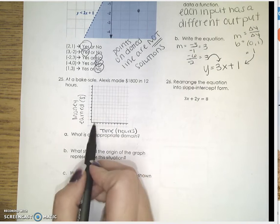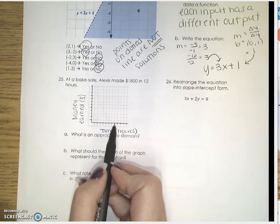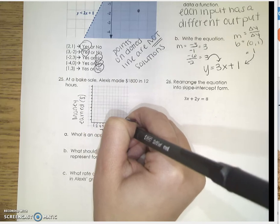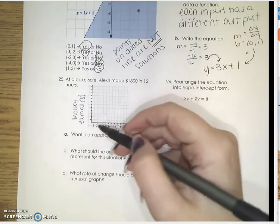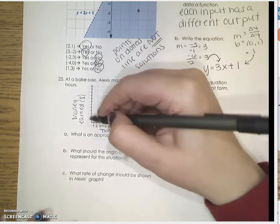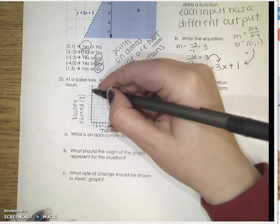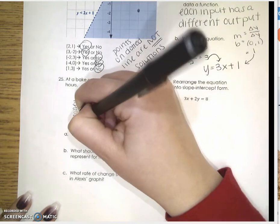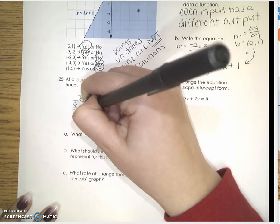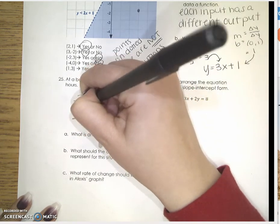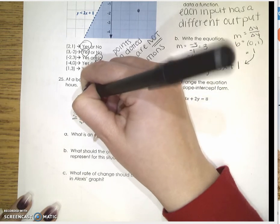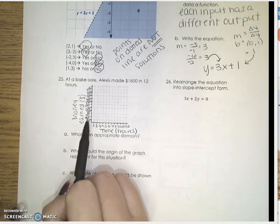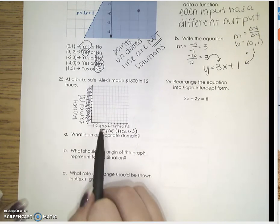So it says that we need to go up to 12 hours. So 1, 2, 3, 4, 5, 6, 7, 8, 9, 10, 11, 12. And money earned, I need to go up to at least $1,800. So I'm going to go up by $2,000. So now I have everything going up by $2,000 and time going up by 1 hour.